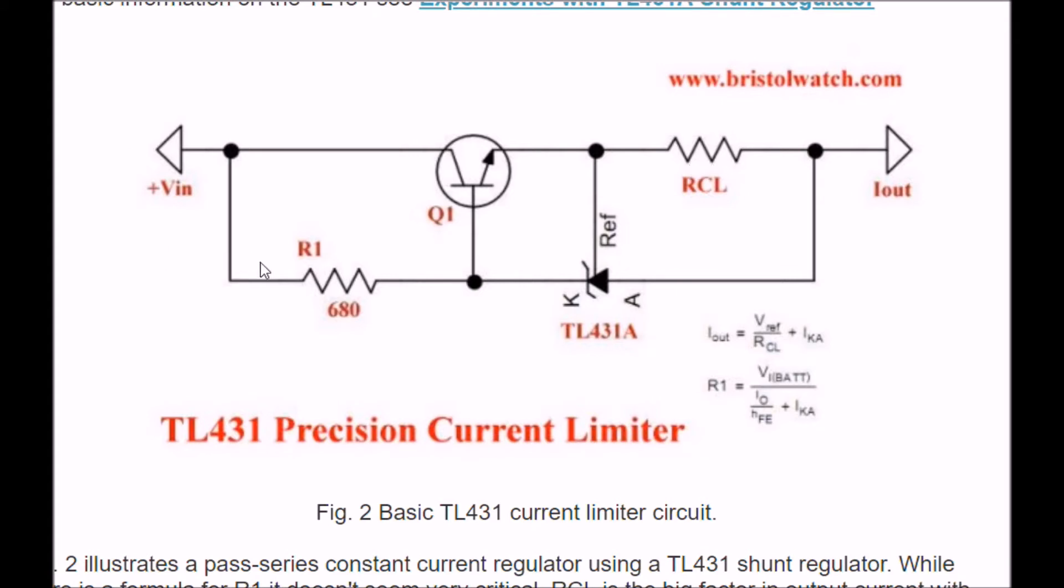Yes, there is some current that flows through R1 that's divided between Q1 for IB and IK through the cathode. Most of the current output is determined by the value of RCL.